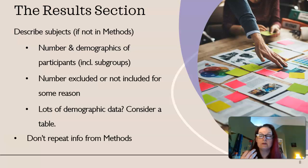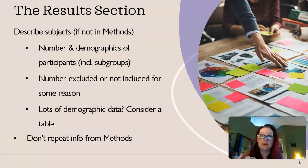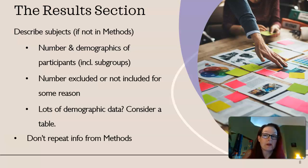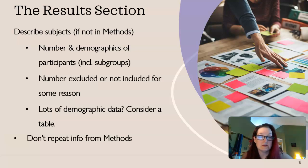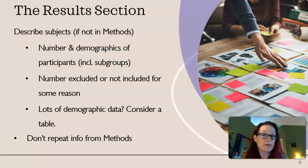If you haven't done so already in your methods section, describe your subjects — number and demographics of participants, including any subgroups, and the number that were excluded or not included for whatever reason. If you have lots of demographic data, it's a good idea to make a table to explain all of that rather than getting into it in the text, which can be long and take up a lot of space. You don't want to repeat information from your methods section, though — if you've already done all that, you don't have to do it again.